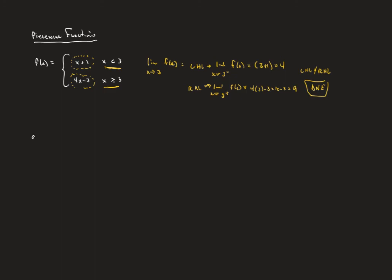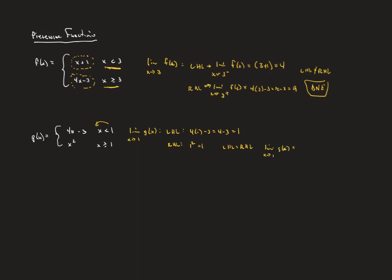Another example: g(x) = 4x − 3 for x < 1, and x² for x ≥ 1. What is the limit as x approaches 1? The left-hand limit: 4(1) − 3 = 1. The right-hand limit: 1² = 1. Since the left-hand limit equals the right-hand limit, the limit as x approaches 1 of g(x) equals 1.